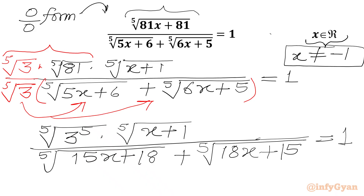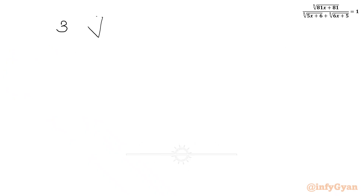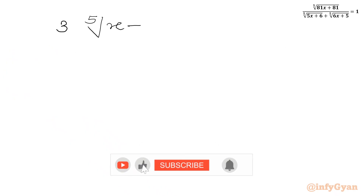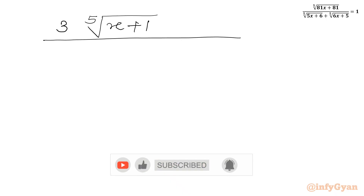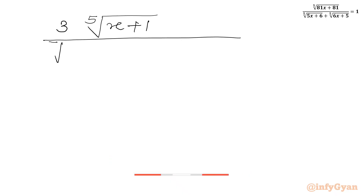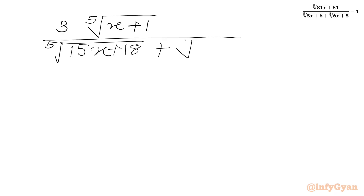RHS is 1. Now fifth root and power 5 will cancel. We write our equation: 3 times fifth root of x plus 1 in the numerator, and the denominator is fifth root of 15x plus 18 plus fifth root of 18x plus 15, equal to 1.